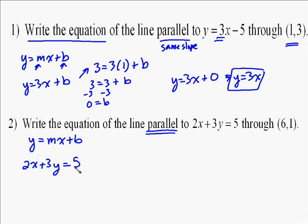So 2x plus 3y equals 5, so put it in slope-intercept form. We're going to subtract 2x from both sides because slope-intercept form gets y by itself. Now we have to divide through by 3 because y has to have a coefficient of 1, and we end up with y equals negative 2-thirds x plus 5 over 3.